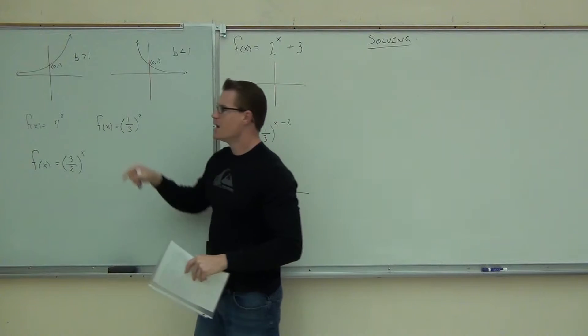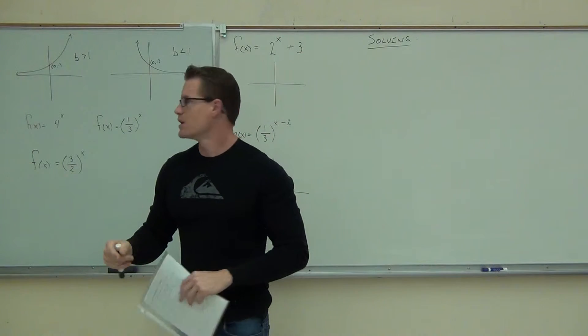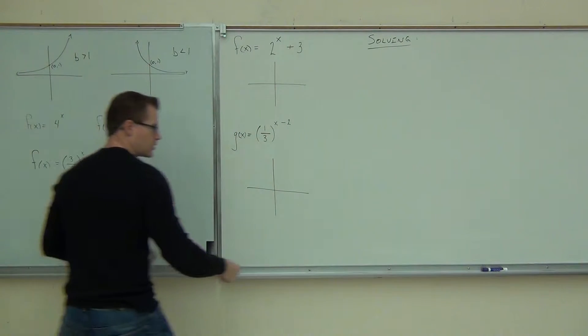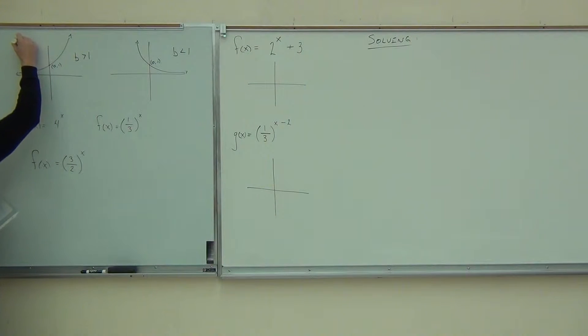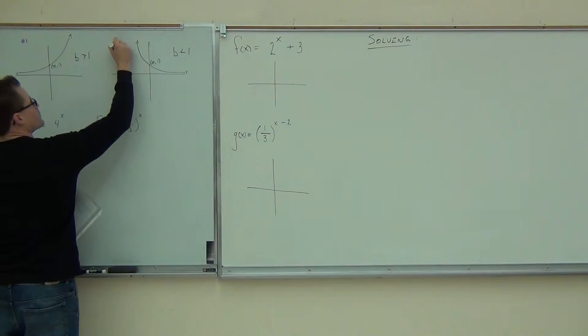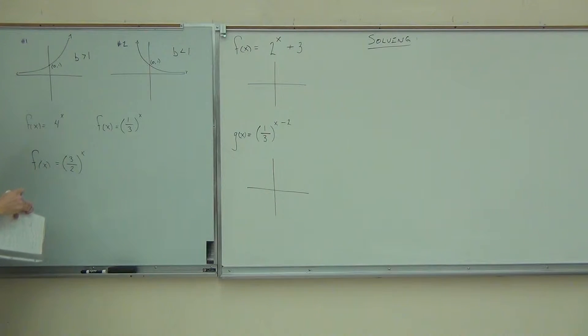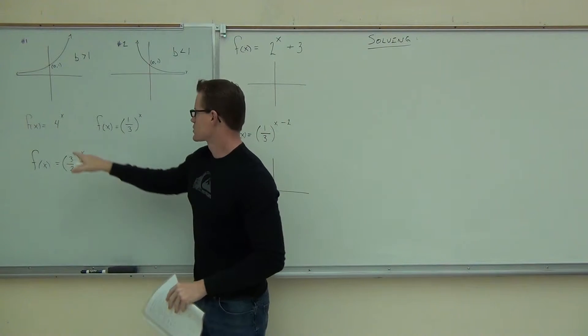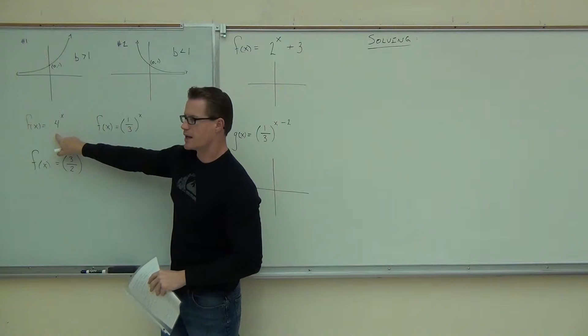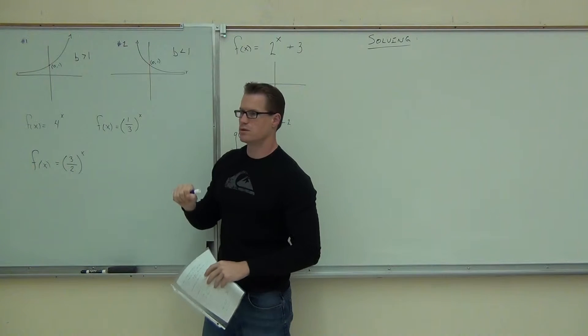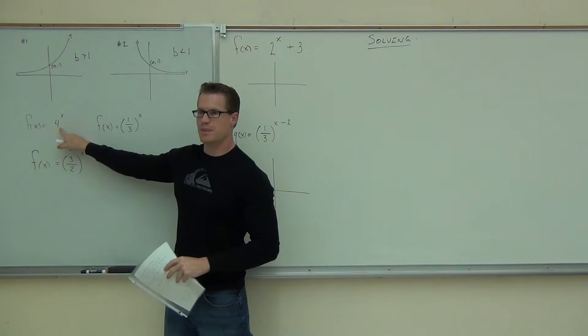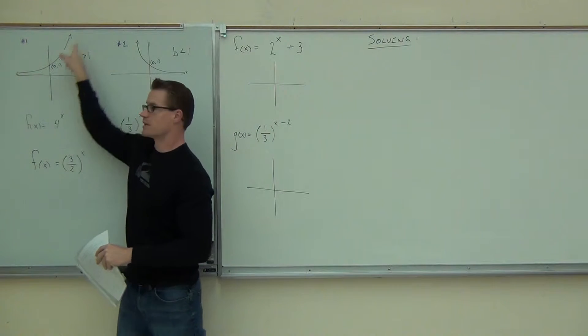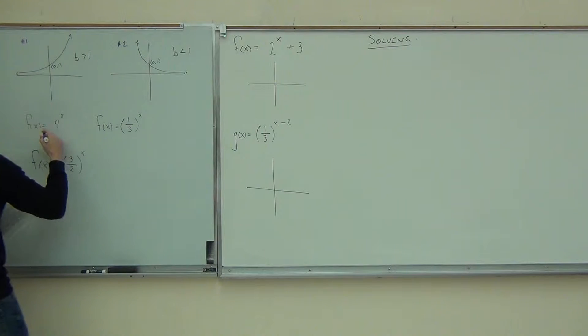Now, let's go ahead and refresh your memory on this. Let's call this graph number 1 and graph number 2. Can you tell me, ladies and gentlemen, what graph does this one look most like? 1 or 2? 1. Why 1? Greater than 1. So this 4, let's say, that's our base, right? b is bigger than 1. It's going to be climbing like that. This is most like graph number 1.